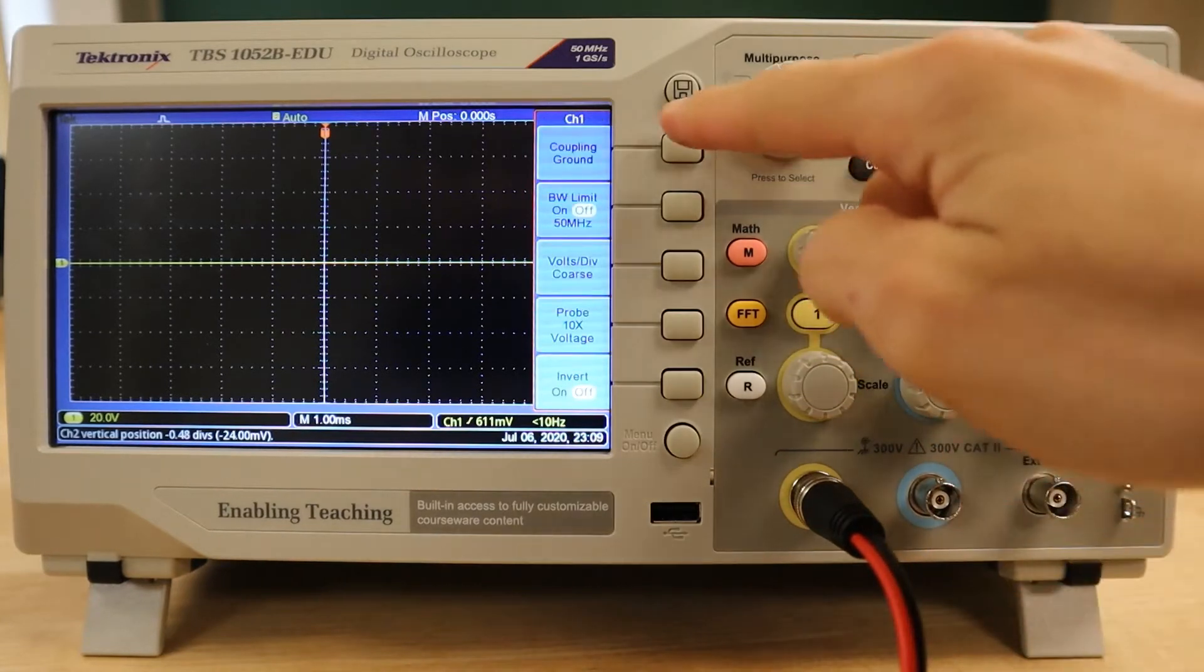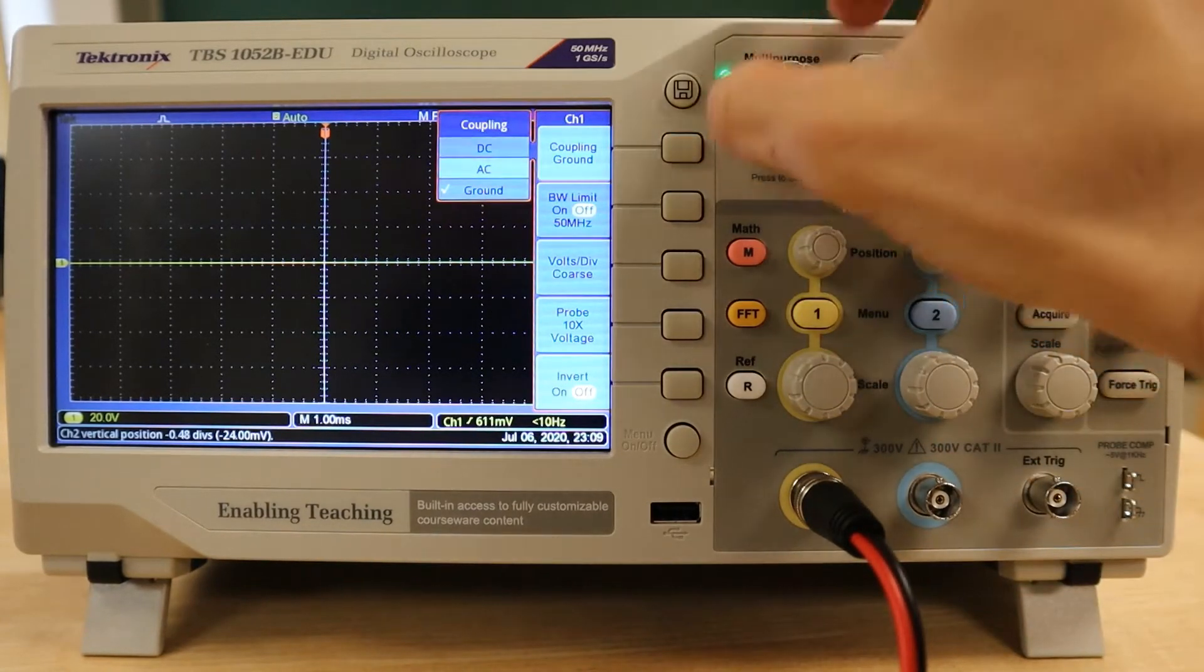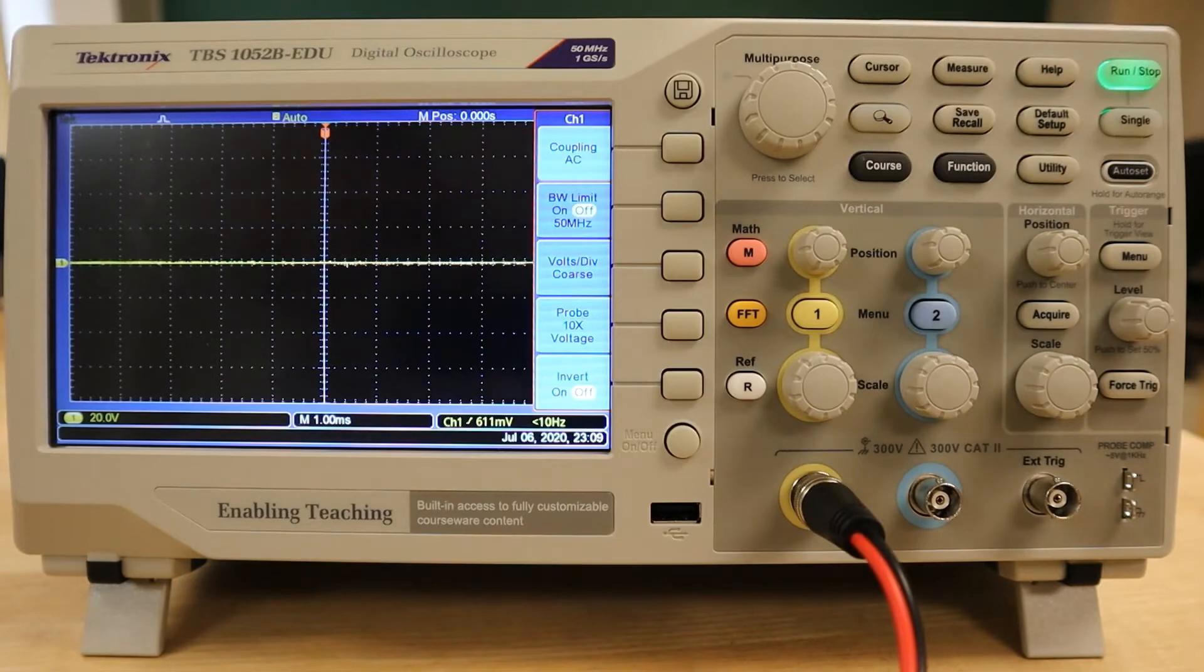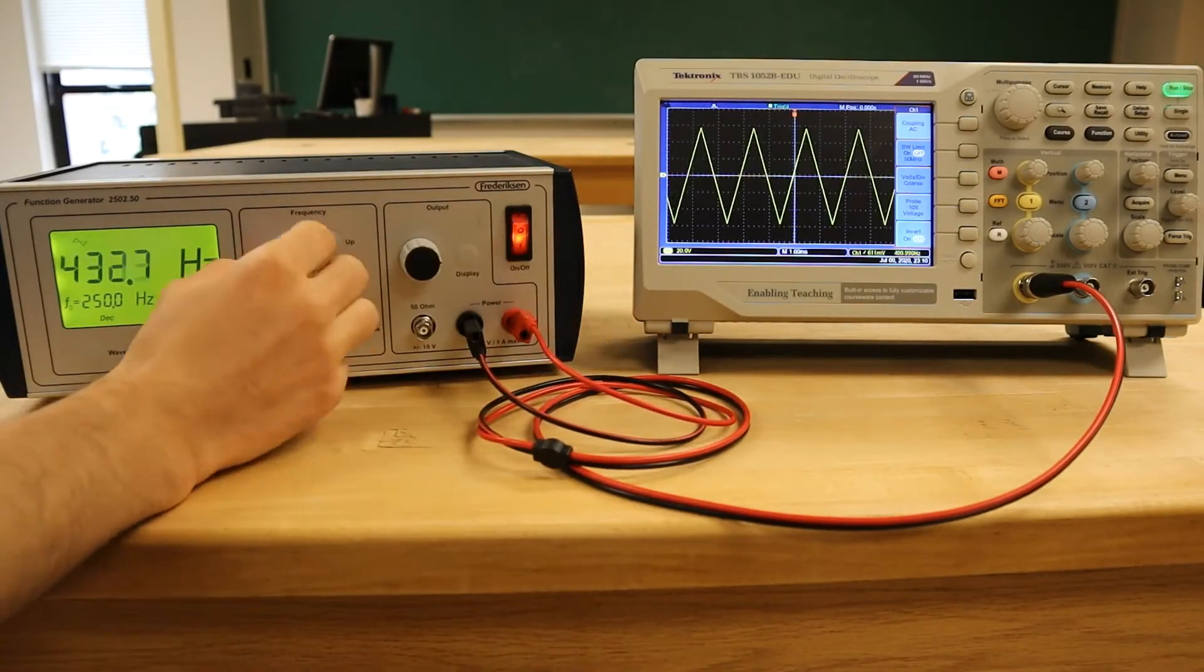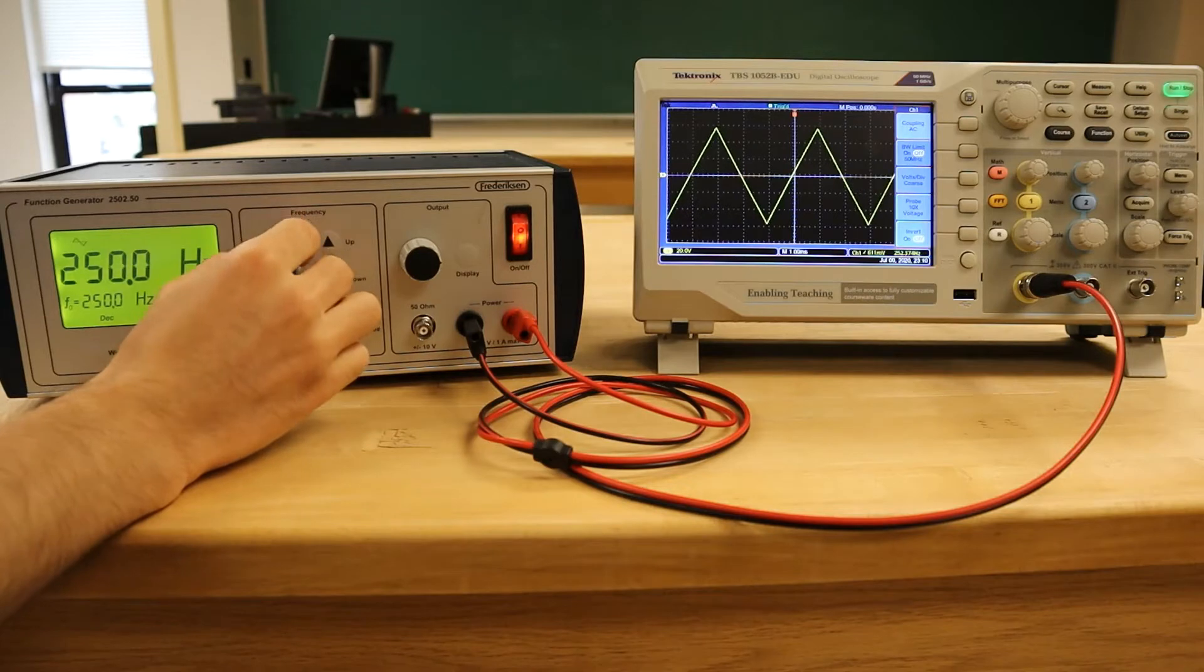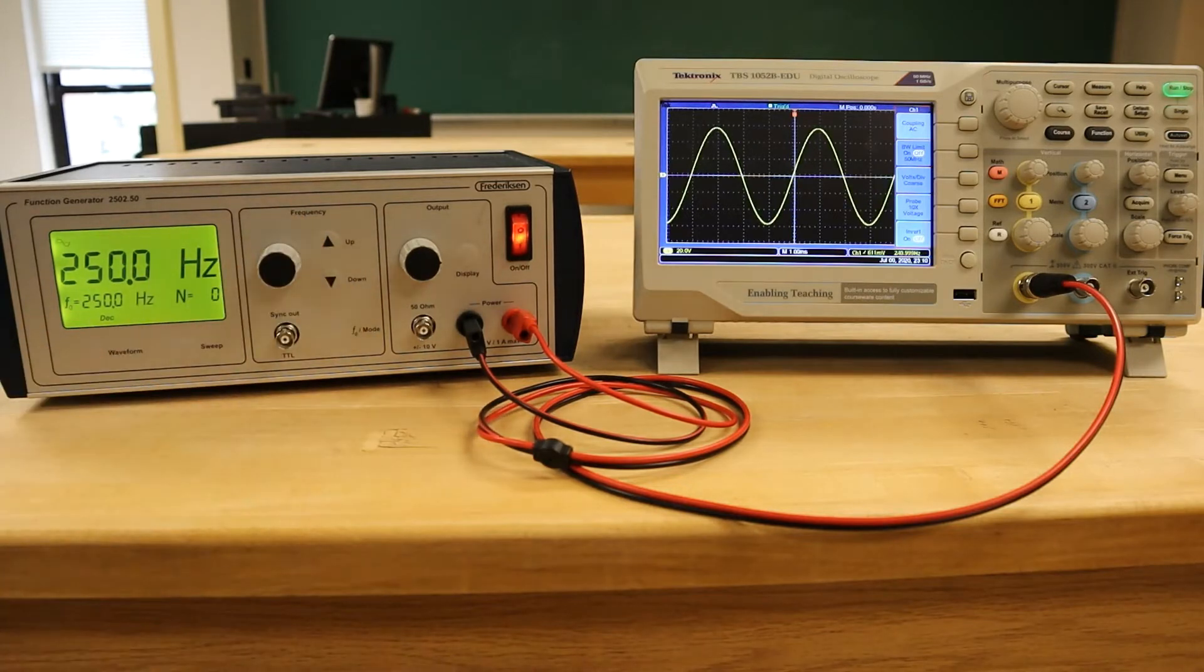Make sure to change the coupling type back to AC before connecting the function generator. The function generator will be set to a 250 Hz sine wave for this first part of the experiment.